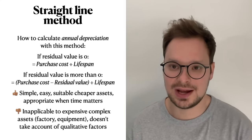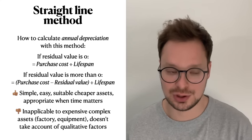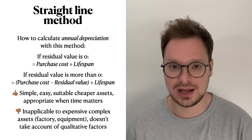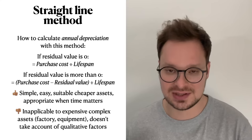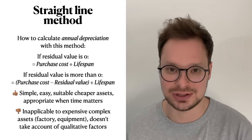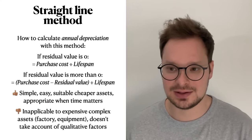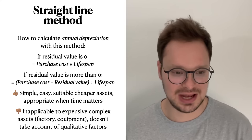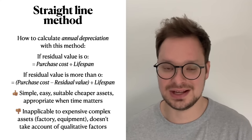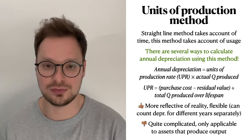On the other hand, it's quite hard to apply the straight-line method to more complex assets that consist of different smaller components — for example, a factory building or complex equipment. In addition, the straight-line method does not take account of any qualitative factors; it only uses time, lifespan, and residual value. For the units of production method, the main thing is usage — how intensively you use an asset. With this method you can actually calculate different depreciation for different time periods, making it more dynamic and reflective of reality.